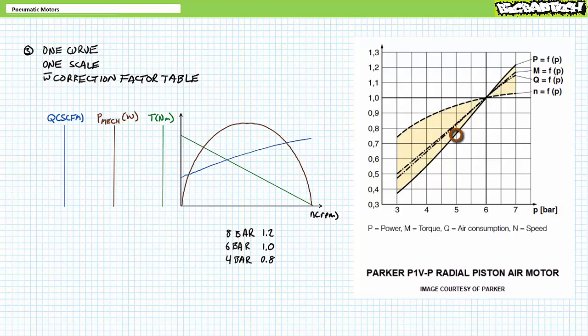For example, this chart shows everything at six bar needs no modifier, i.e. one. However, at five bar, mechanical power gets maybe a 0.75 correction factor. Both flow rate and torque, again, for some odd reason abbreviated as M, it's maybe at a 0.82 correction factor, and speed needs to be multiplied by maybe 0.95.